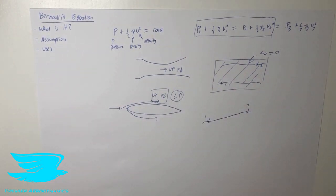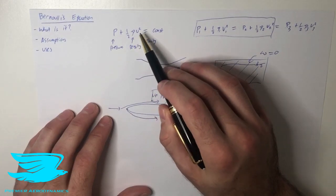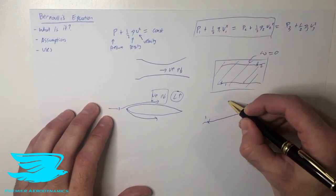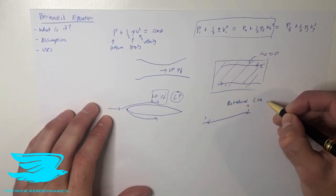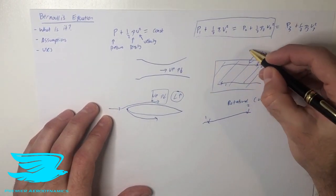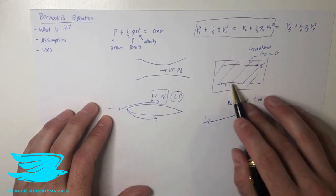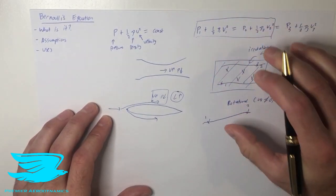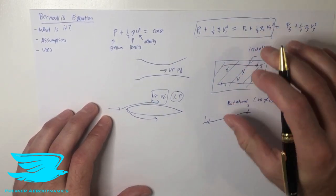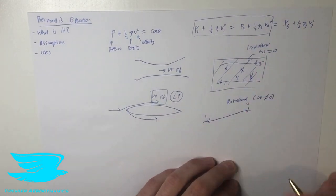So that is Bernoulli's equation in a nutshell, and it's very powerful. To recap: if you have pressure, density, and velocity, this equation tells us that the sum p plus half rho v squared has to remain constant along a streamline if the flow is irrotational. If the vorticity is zero — so the flow is irrotational — then this equation holds true no matter where you are in the domain, and you can use it to calculate pressure, velocity, or density at different points by knowing those properties elsewhere. The key assumption is that the flow is incompressible for this particular form.